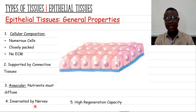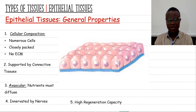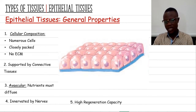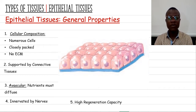Epithelial tissue is innervated by nerves, meaning it doesn't have blood vessels but does have nerves that innervate it. Additionally, epithelial tissue has a high regeneration capacity — whenever there is destruction of this tissue, it is able to regenerate very quickly. For example, skin cells that are shed are quickly replaced, which is a unique property of epithelial tissue.